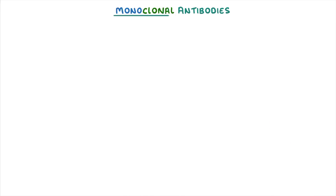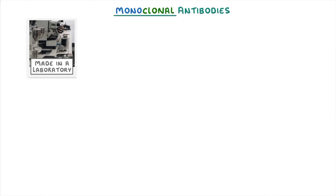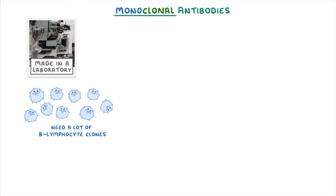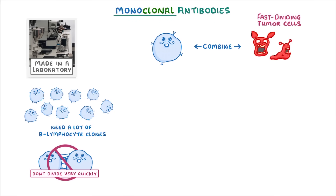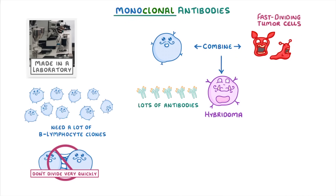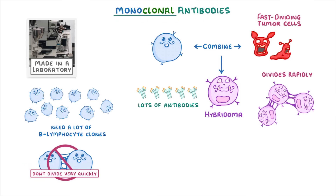When we talk about monoclonal antibodies though, we're normally referring to ones made in a laboratory. To make them on a large scale, we need a lot of B lymphocyte clones. But unfortunately, they don't normally divide very quickly. To fix this, we have to combine them with fast dividing tumour cells. And once the B cells and tumour cells fuse, they form something called a hybridoma, which still produces lots of antibodies like a B lymphocyte, but also divides rapidly like a tumour cell.